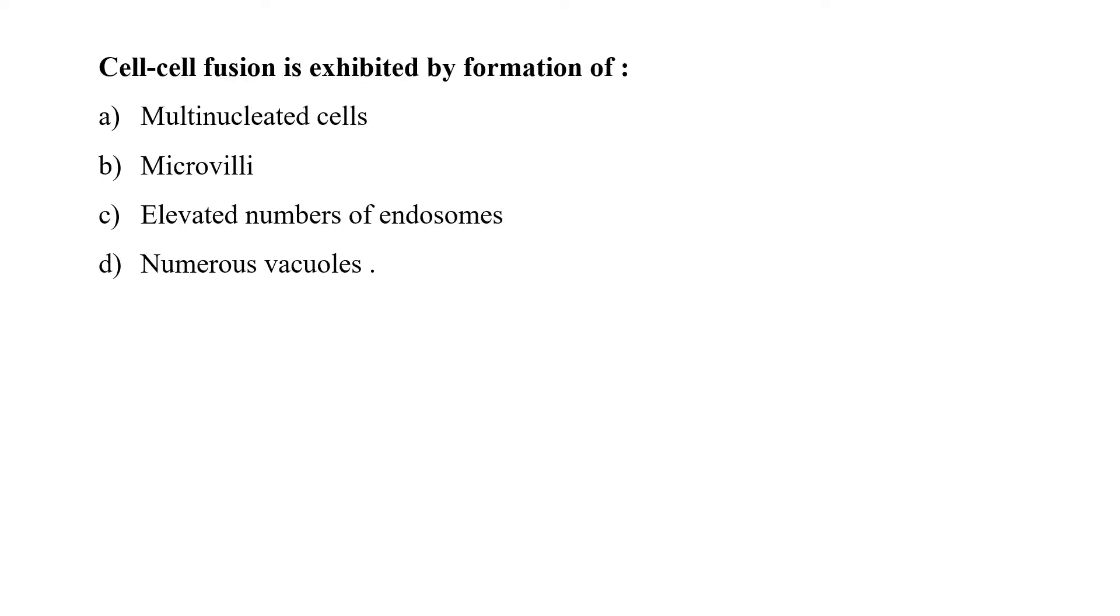Cell-to-cell fusion is exhibited by the formation of multinucleated cells, microvilli, elevated numbers of endosomes, or numerous vacuoles. Cell fusion is an important cellular process in which several uninucleated cells, that means cells with a single nucleus, may combine to form the multinucleated cells which is also called as syncytium. So option A is the correct answer.